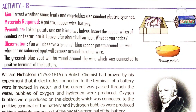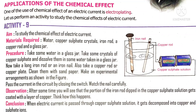Now let's move on to the application of the chemical effect. This chemical effect is used for electroplating. What is electroplating? Depositing one metal over another inferior metal is called electroplating. For example, if you want a gold look on a silver plate, you can coat the plate with gold. Such coating of gold over a silver plate is called electroplating.